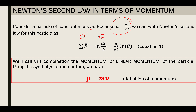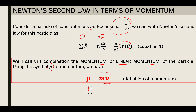So we have, for the time rate of change, d over dt, times mass times velocity. This will be equation number one. We call this combination — mass times velocity — the momentum, or the linear momentum of the particle. Using the symbol small letter P for momentum, we now have the equation for the definition of momentum.